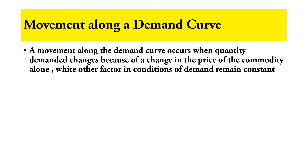The next subtopic is movement along a demand curve. A movement along the demand curve occurs when the quantity demanded changes because of a change in the price of the commodity alone, while other factors and conditions of demand remain constant.